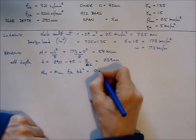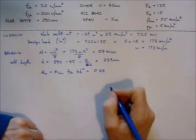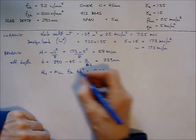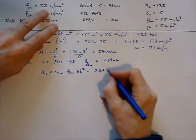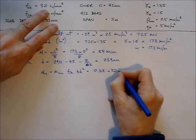K_lim, simply supported slab, no redistribution of moments, it's always 0.168. F_ck, we know this from the start, it's 32 newtons per millimeter squared.